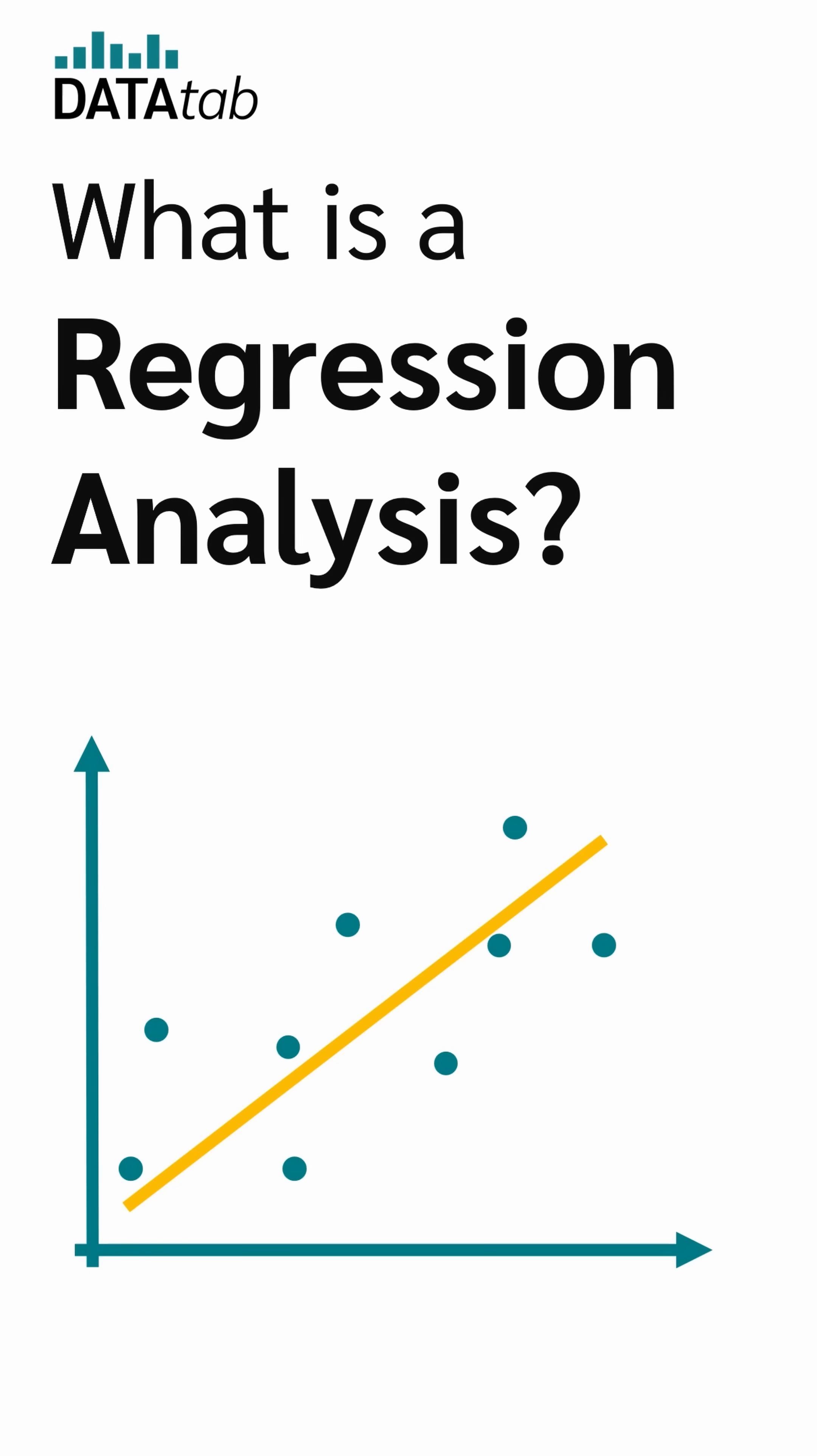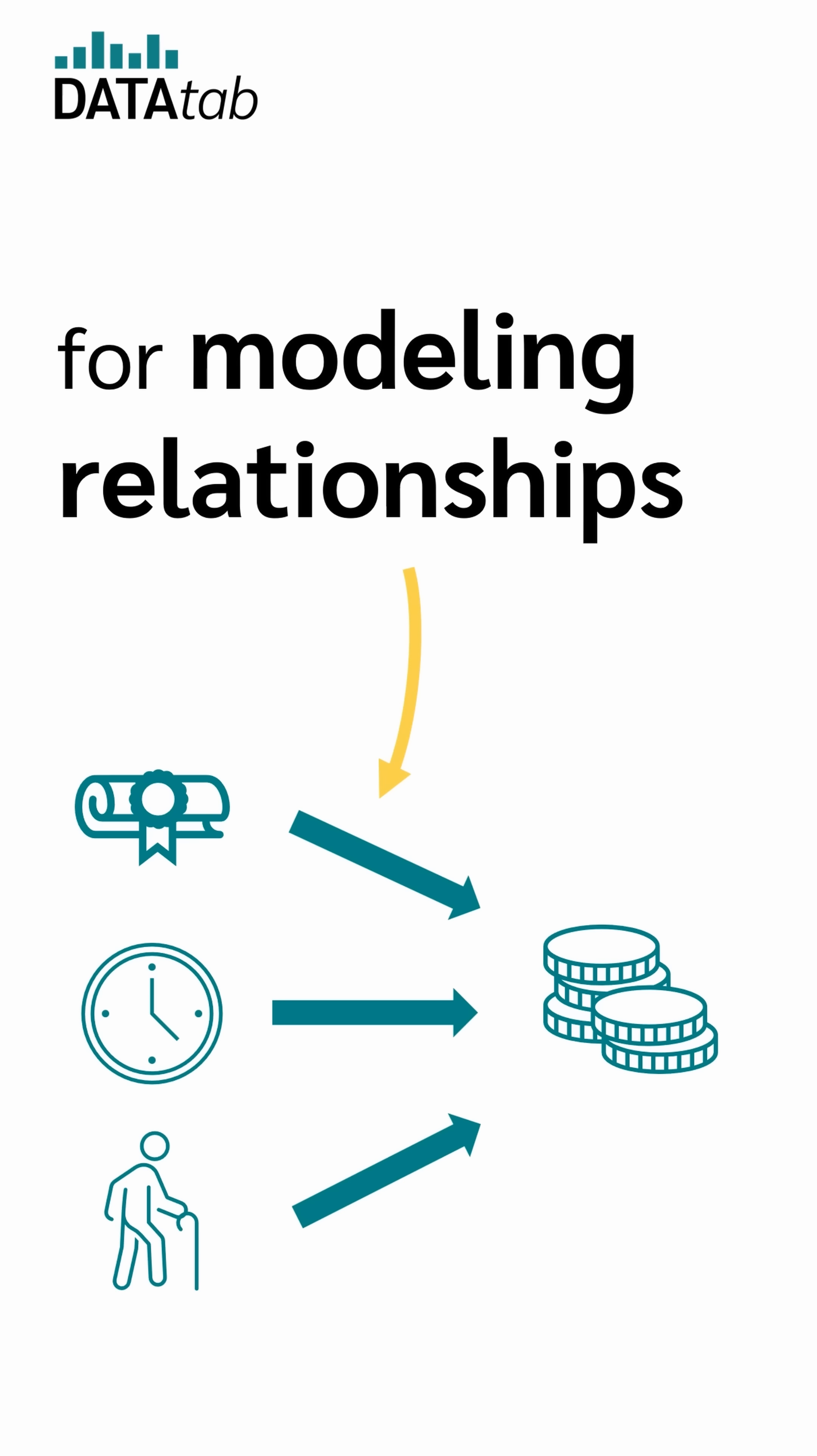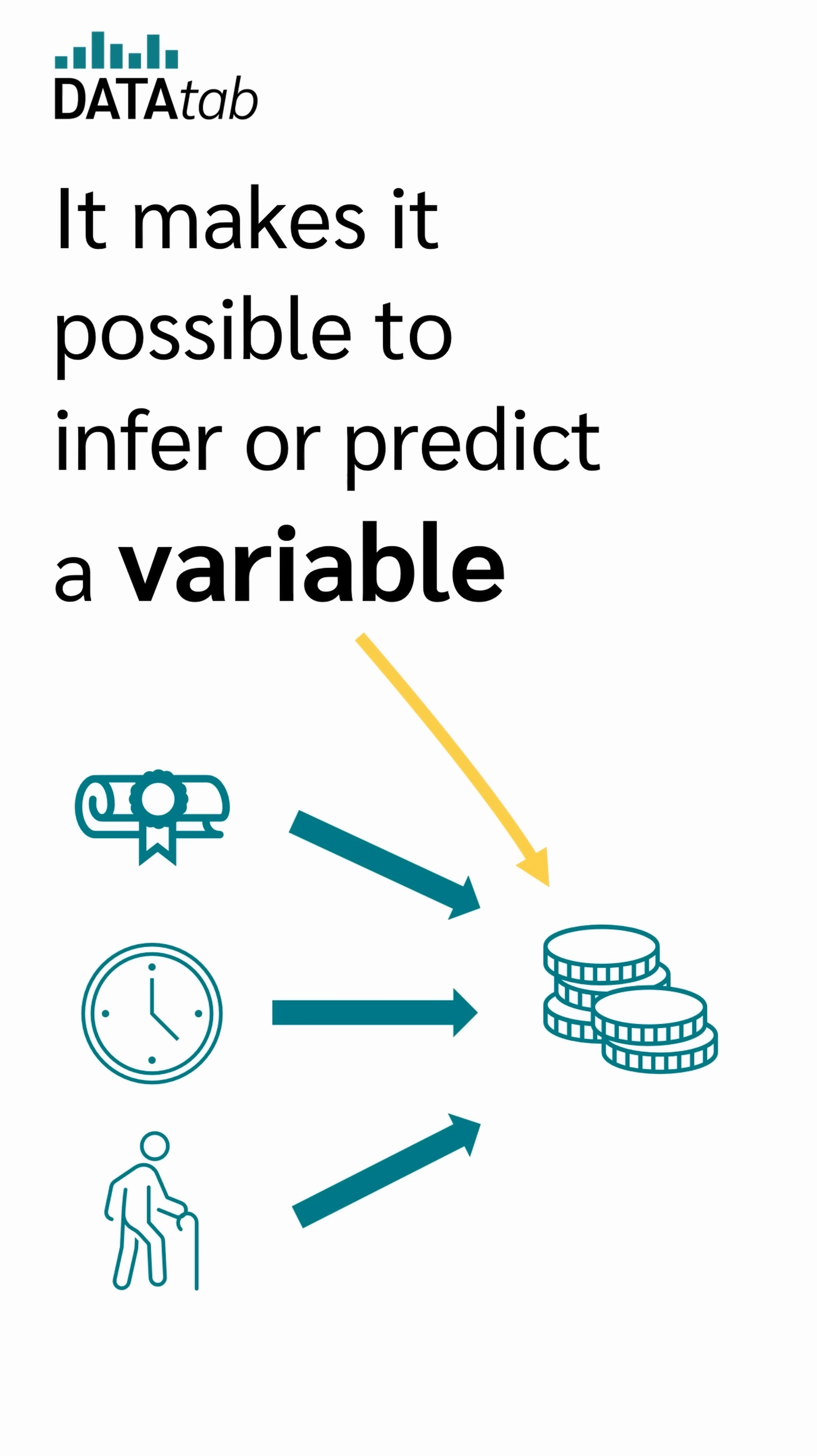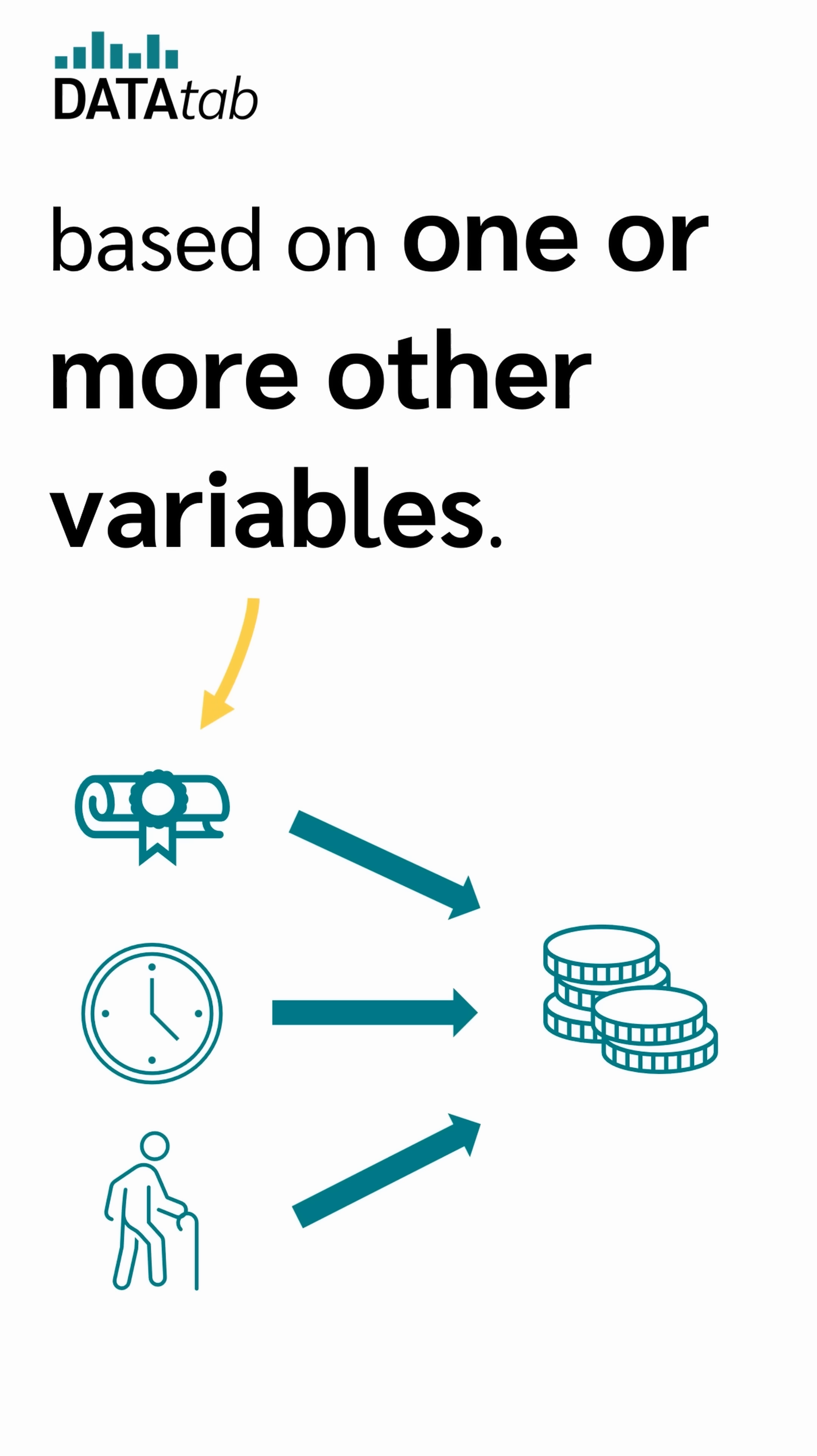What is a regression analysis? A regression analysis is a method for modeling relationships between variables. It makes it possible to infer or predict a variable based on one or more other variables.